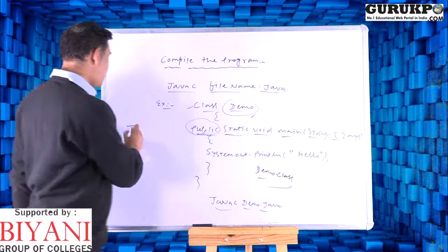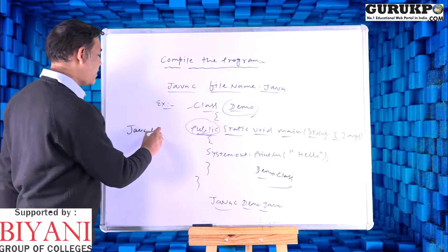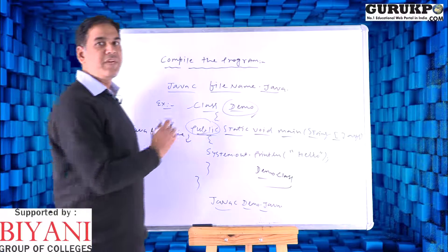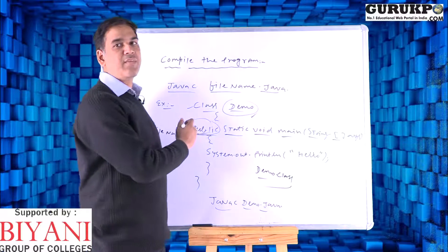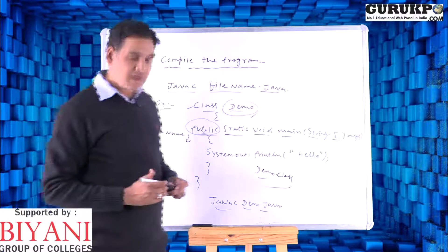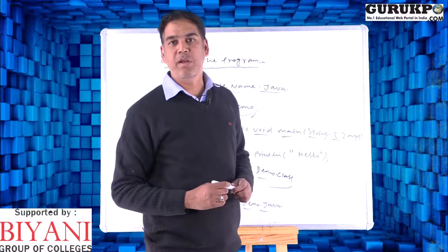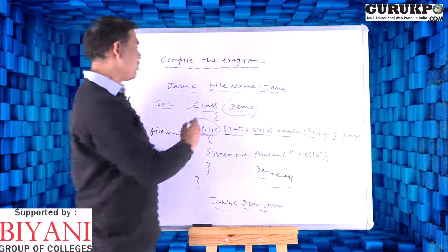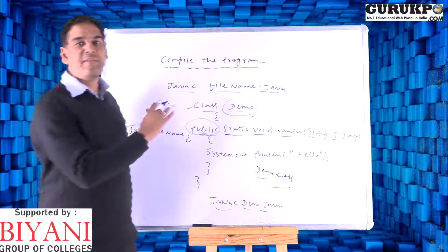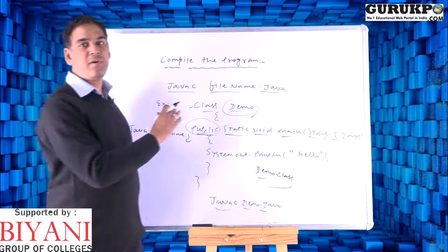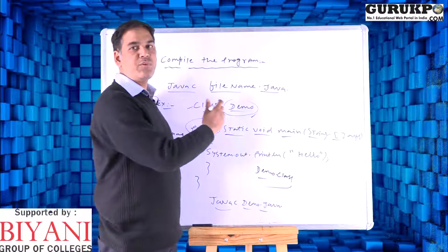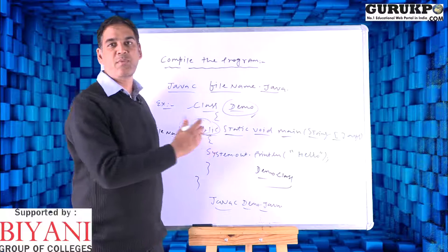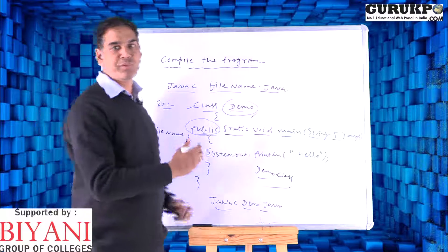After compilation we get only the class file, not the executable file. To get the executable output we have to run the program. The command is java followed by the file name, then press Enter — that will run the program. These are the two steps to execute a Java program: first compile, then execute after creating the bytecode.